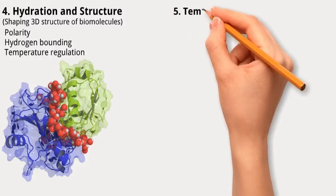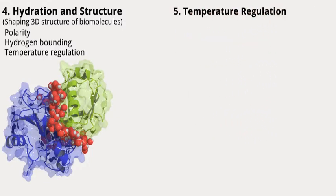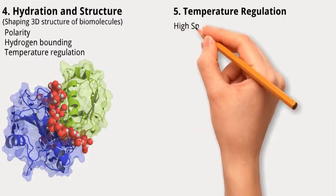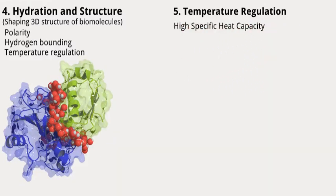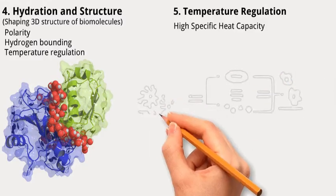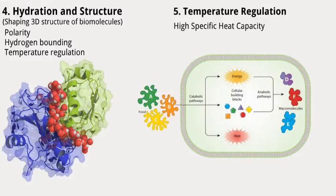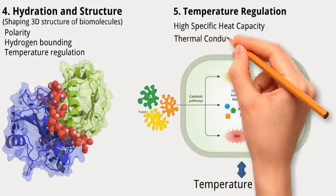Five, temperature regulation. In the context of cells, because water has a high specific heat capacity, it helps to resist changes in temperature. Also, it absorbs heat generated by biochemical processes, such as metabolism and chemical reactions in cells. It prevents heat concentration and contributes to temperature balance in the cell due to its thermal conductivity.